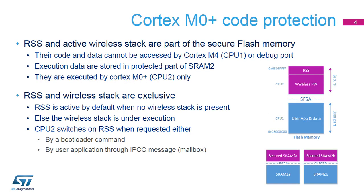The RSS firmware, as well as the wireless stack, are sensitive code with embedded cryptographic data. Therefore, it is stored in the secure part of the flash memory accessible only by the Cortex-M0 Plus Core. Code and data stored in this memory part cannot be accessed by any application running on the Cortex-M4 Core, nor can they be accessed by the debug port.